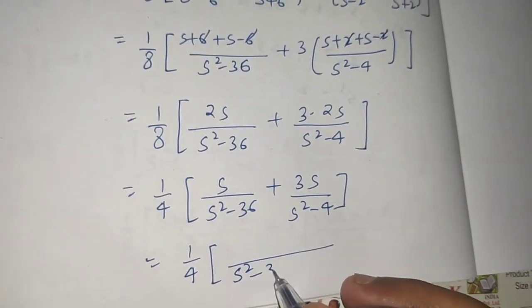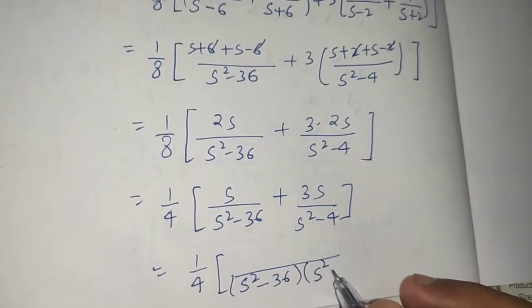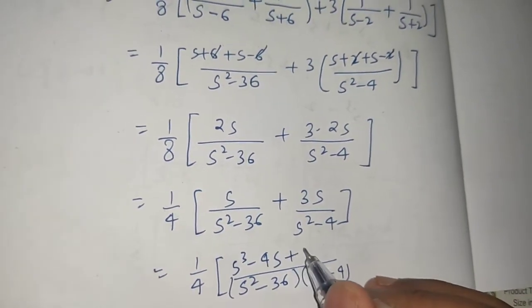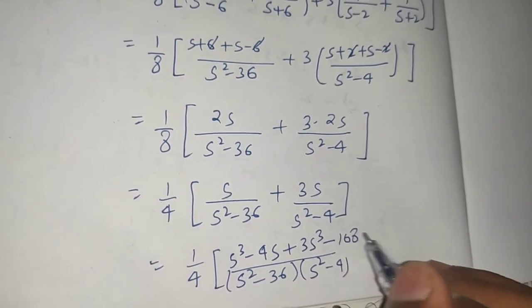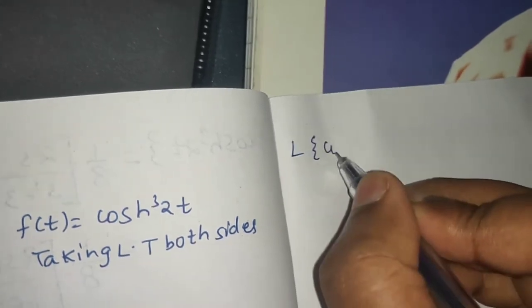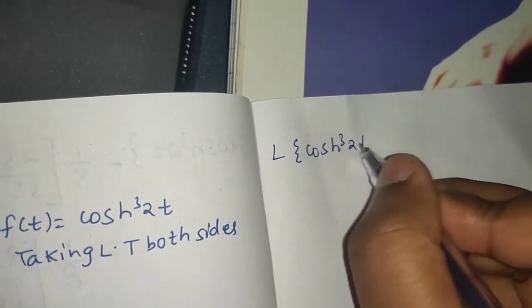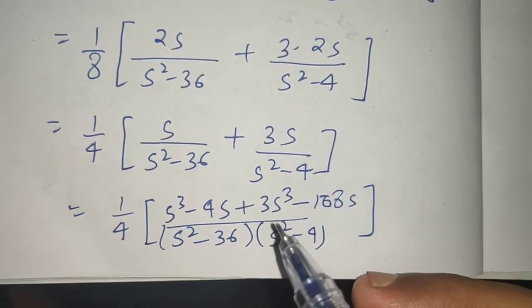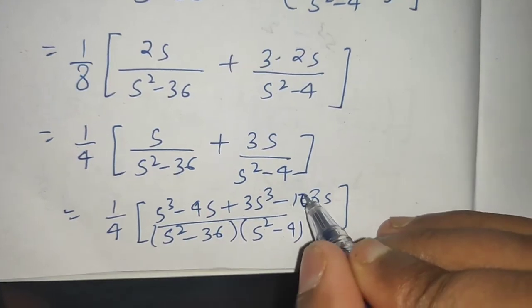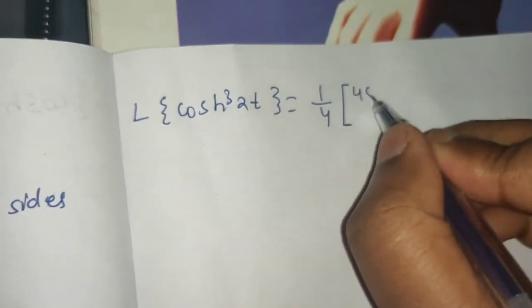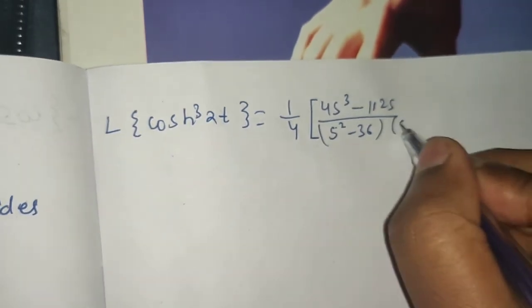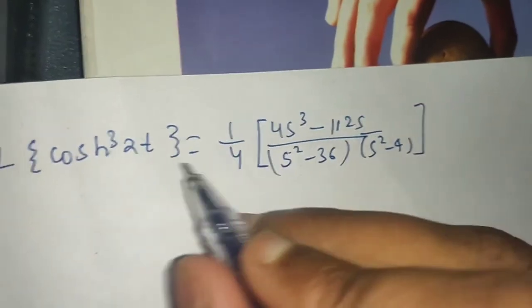Combining the terms: s cubed minus 4s plus 3s cubed minus 108s, giving 4s cubed minus 112s in the numerator. So the Laplace of f(t), where f(t) is cosh cube 2t, is 1 by 4 outside times (4s cubed minus 112s) over (s squared minus 36)(s squared minus 4).